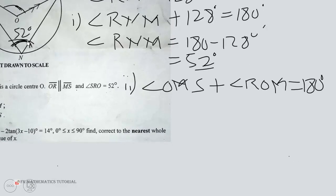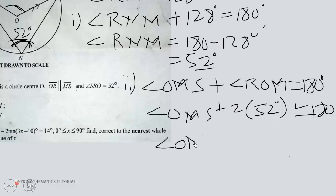Because this is angle at the center, so it is twice the one on the circumference, which is 52 degrees. So angle OMS will be equal to 180 minus 104, which equals 76 degrees.